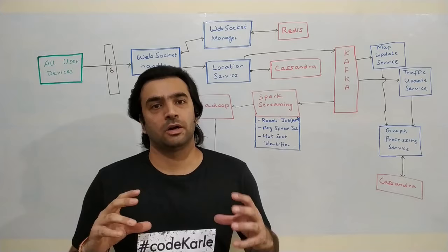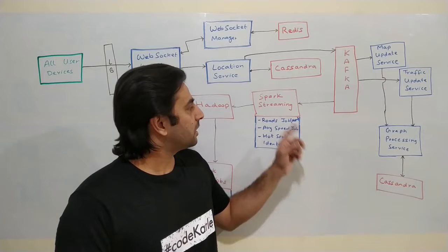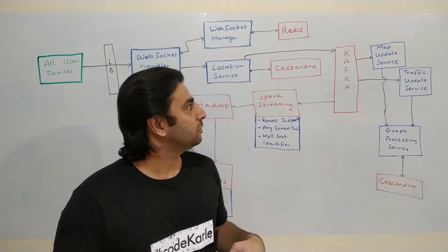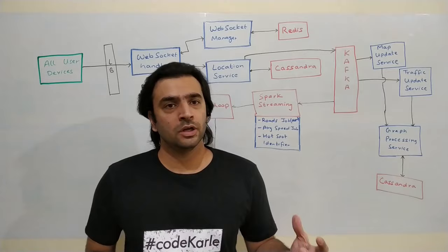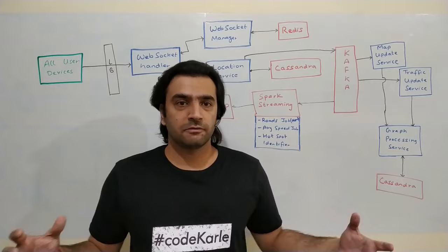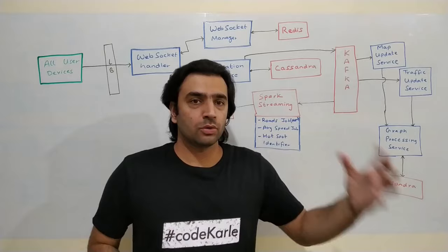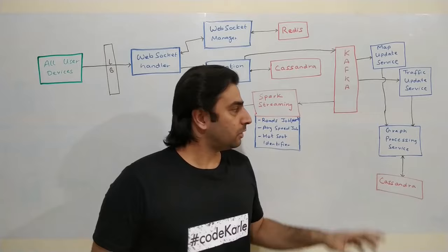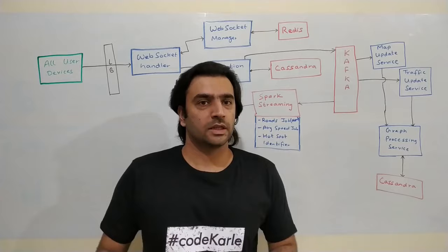These streaming jobs write back events to Kafka on separate topics. If a new road is identified, a message goes to a topic saying a new road connects point X to point Y. The map update service listens to that topic and updates a graph Cassandra managed by the graph processing service. Each time a new road is found, map update service invokes graph processing service to store it.